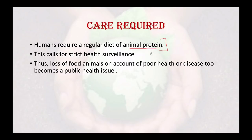Urgent steps are needed. Humans require a regular diet of animal protein for good health, which calls for strict health surveillance to incorporate domestic animals, livestock, and poultry. There is also a loss of food animals on account of poor health — animals fall ill and die, and their diseases become public health issues. We lose up to 20 percent of our animals this way.